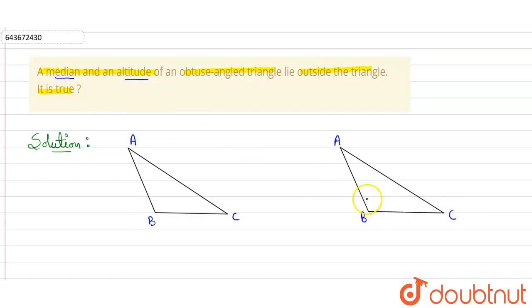So first let me tell you what is an obtuse angle triangle. An obtuse angle triangle is a triangle in which one side of triangle is greater than 90 degrees and the other two sides are smaller than 90 degrees. This is an obtuse angled triangle.